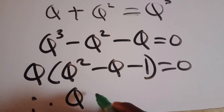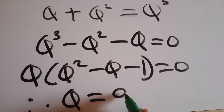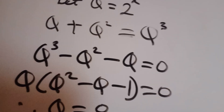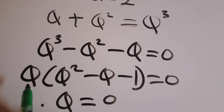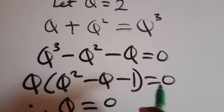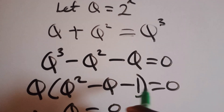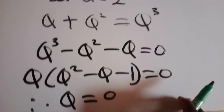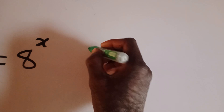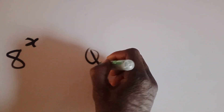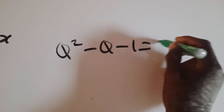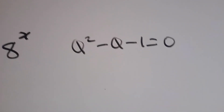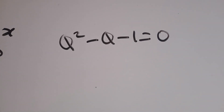By the zero product property, the first case gives q equal to zero. For the second case, we equate q squared minus q minus 1 equal to zero as well.